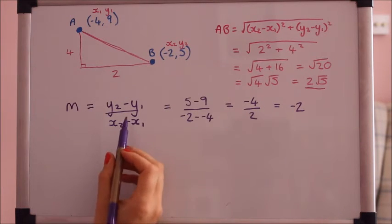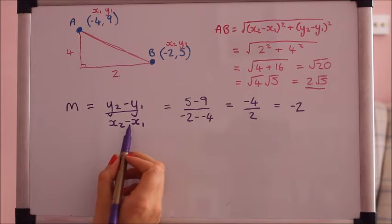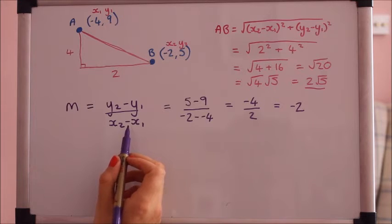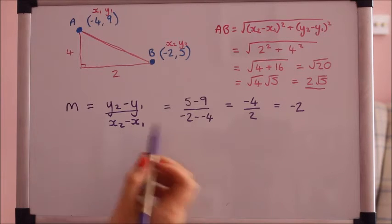So if you do just substitute those numbers into this formula that's probably the way that will give you the least mistakes because the majority of mistakes in core 1 are from minus signs.